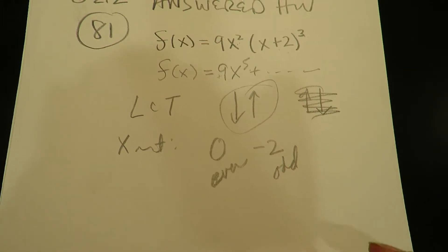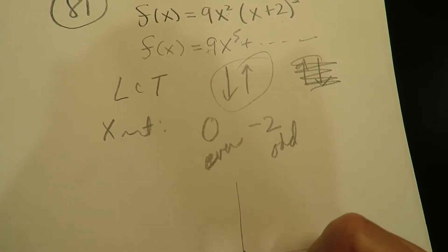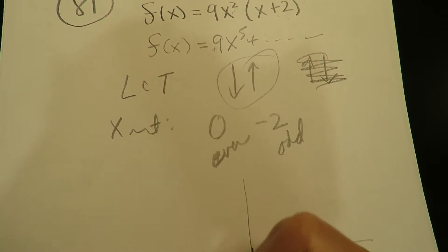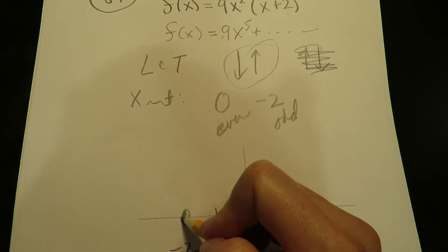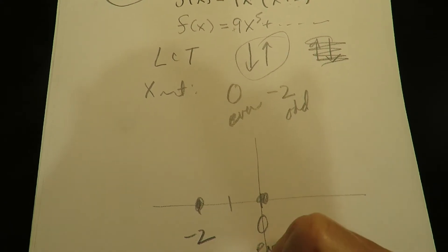Remember, the exponents tell you whether it's even or odd. All right, so zero and negative 2, this guy's even, this guy's odd.